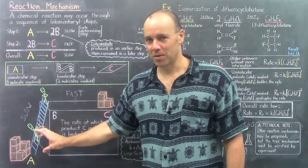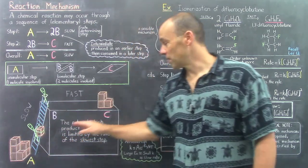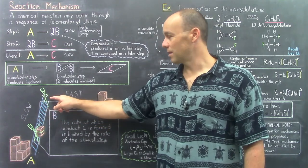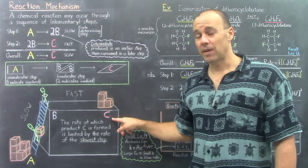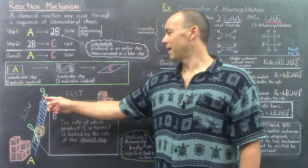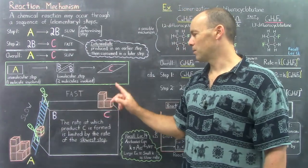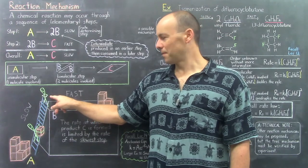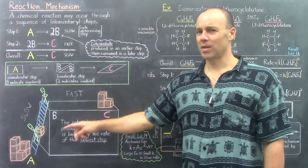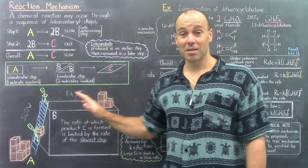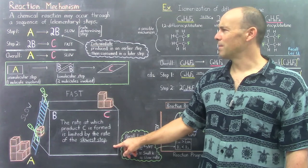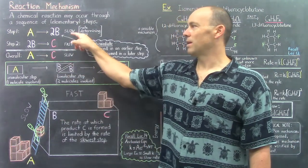Imagine these boxes are atoms, and we're trying to get them from situation A over to situation C, where two steps are involved. In the first step, the boxes are carried up the ladder, then passed to a second worker who carries them over the platform and drops them off at the final location C. The second step is much faster than the first step — as soon as the first worker passes the box, the second quickly drops it off and returns, and he's still waiting on the first worker. When you have a two-step process where the second step is fast, it cannot really proceed because it's waiting on the first step. The rate at which product C is formed is limited by the rate of the slowest step. So in chemical reactions, the rate of the overall reaction equals the rate of the rate-determining step.